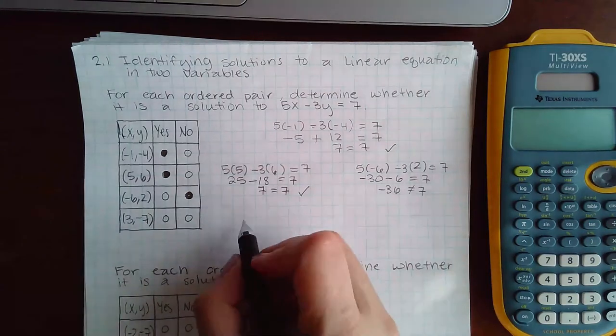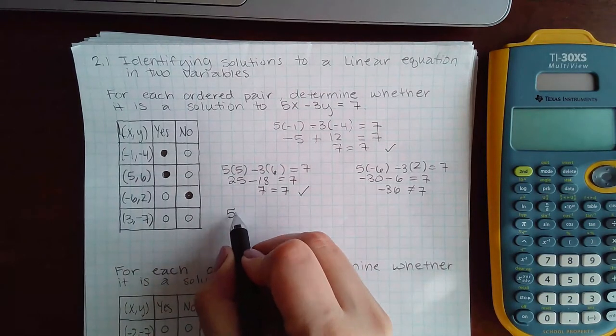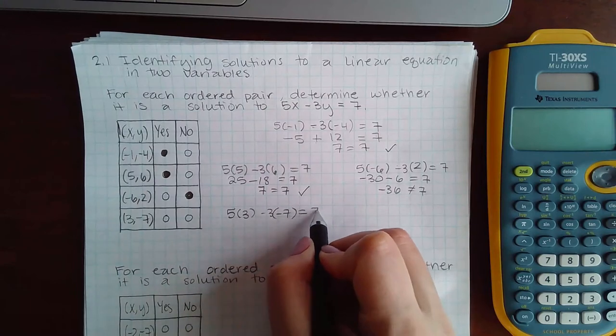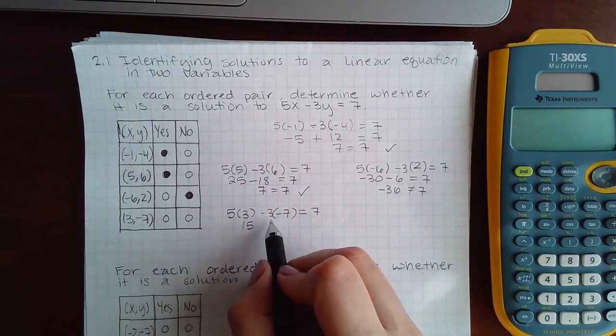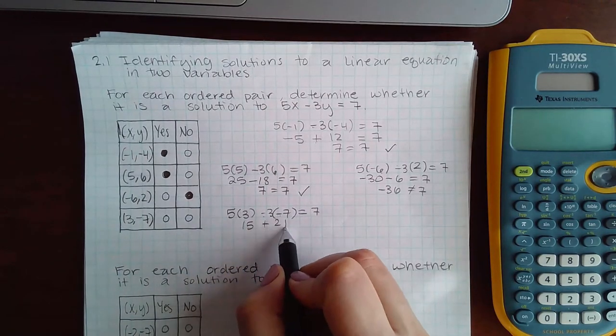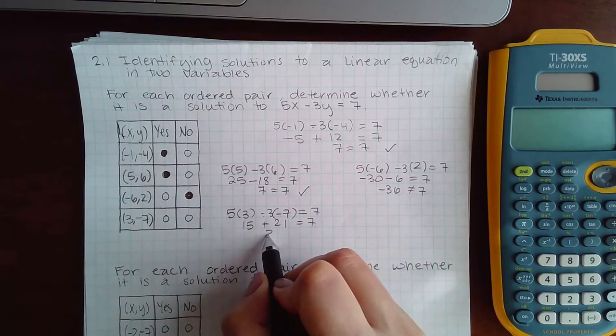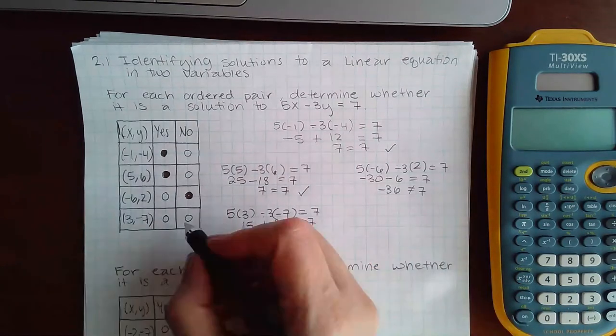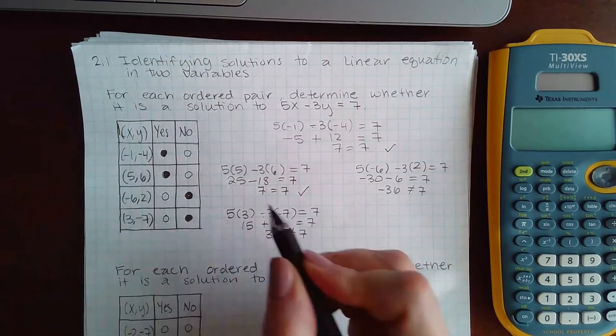So finally, the last point. Plug in 3 for x, negative 7 for y, and see if you get 7. Negative times a negative will be positive 21. So I get 36 again. Positive this time, but still, those are not equivalent. So the answer is no.